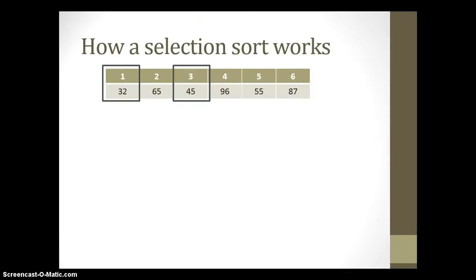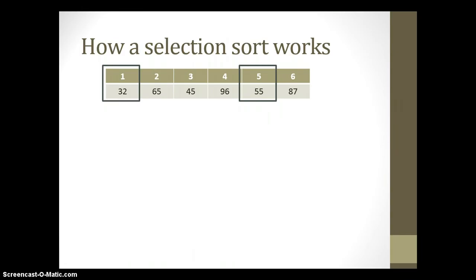We then compare the new position one with position four. 32 is still smaller than 96. Comparing with 55, it's smaller. Comparing with 86, it's still smaller. Once we've gone right through to the end, position one has the correct value — it is sorted. The rest of the array, not so much.